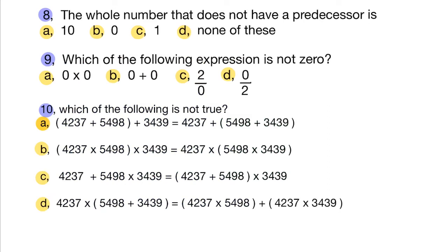Eighth question: The whole number that does not have a predecessor is 0, since 0 is the smallest whole number. Ninth question: Division by 0 is not defined. Tenth question: Which of the following is not true? Option A uses associativity for addition, option B uses associativity for multiplication, and option D uses distributivity of multiplication over addition. So option C is not true.